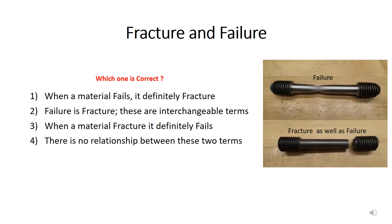To understand fracture and failure, we will look at these figures. In figure one, we can see a dog bone sample subjected to tensile loading. When it is subjected to tensile loading, there is sufficient plastic deformation, which you can see in the form of a neck region that has been formed in the specimen.